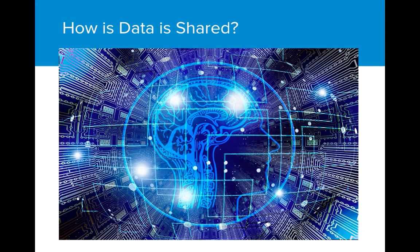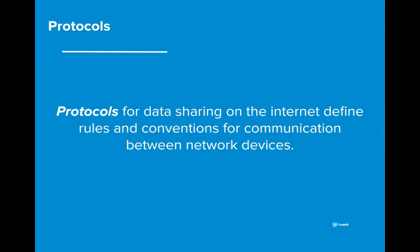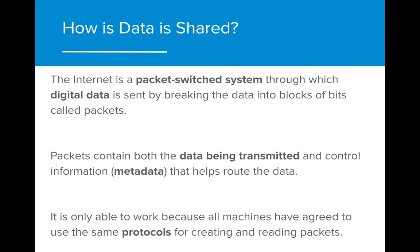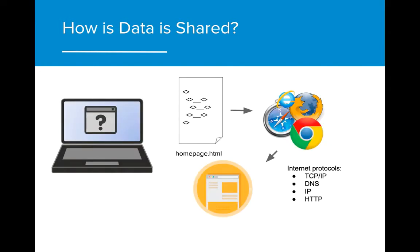All data is shared on the internet via what are called protocols. Protocols for data sharing on the internet are basically rules and conventions for communication between network devices. The internet is a packet-switched system through which digital data is sent by breaking the data into blocks of bits called packets. Packets contain both the data being transmitted and control information, or metadata, that helps route the data. It only works because all machines have agreed to use the same protocols for creating and reading packets. Your computer and any server are able to share data because they use the same protocols — they are agreeing to speak in the same language.